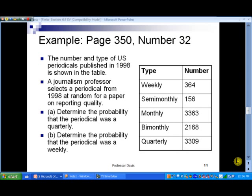Now let's take a look at an example in slide number 11. It says the number and type of U.S. periodicals published in 1998 is shown in the table. A journalism professor selects a periodical from 1998 at random from a paper on reporting quality.